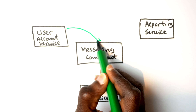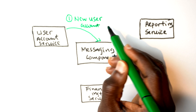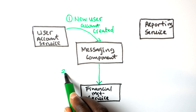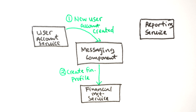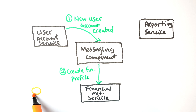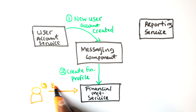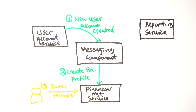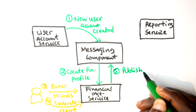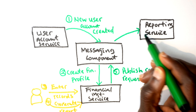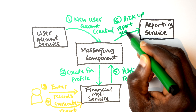By doing this, none of these three services are talking directly to each other — none are tightly coupled. Each service that is a publisher (the user account service publishing new user data, and the financial management service publishing report generation requests) publishes to the messaging component. Each service that is a consumer listens for the messages it's interested in, picks them up, and acts upon them. Notably, the financial management service is both a publisher and a consumer.